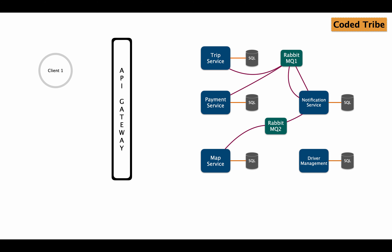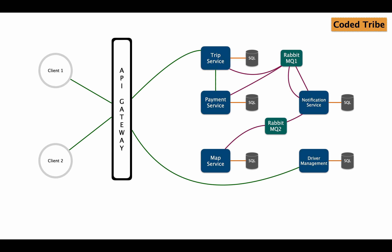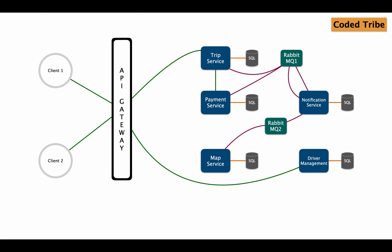For example, in an Uber-like taxi application, if I want to know the payment for my last trip, I open my mobile or web application. That request goes to the API gateway, which matches it to the related microservices. The gateway invokes the trip service, which internally calls the payment service and returns the response back to the client.